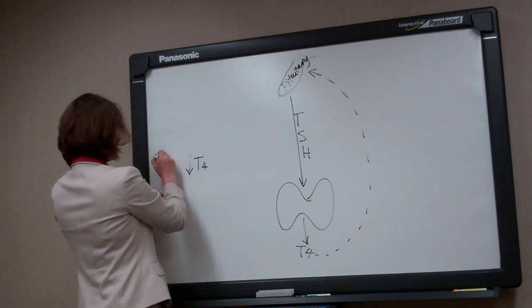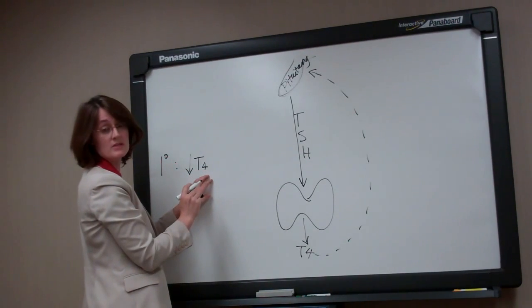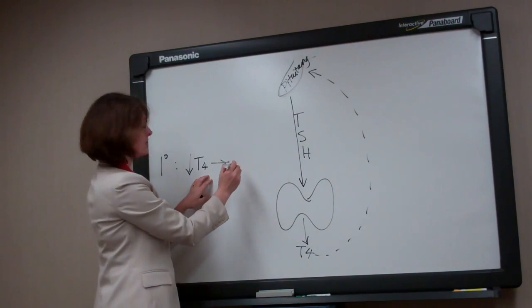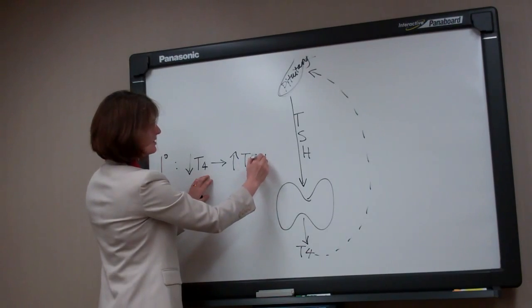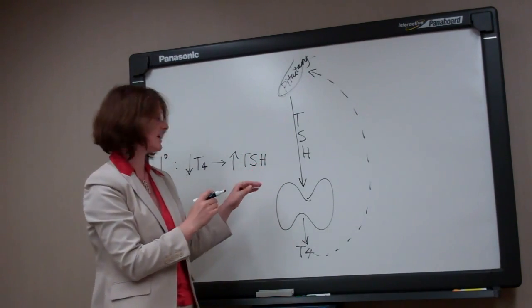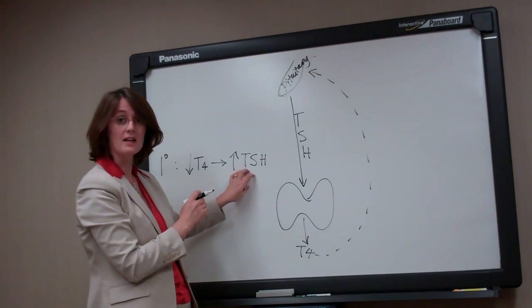So in primary hypothyroidism, we have a low T4 because of a sick thyroid gland, which results in the pituitary gland shouting louder at the thyroid and increasing the TSH. And that can be confusing for people because we talk about hypothyroidism, people know that it's underactive, and yet we talk about a high blood test. This is why. It's because it's a high TSH.